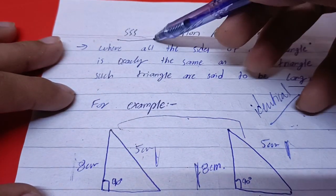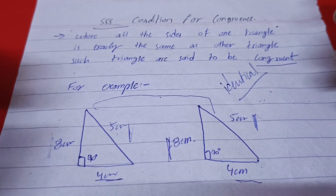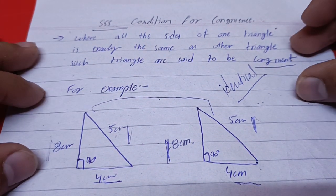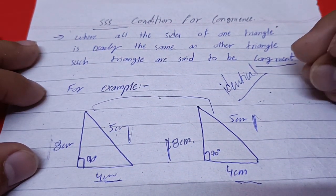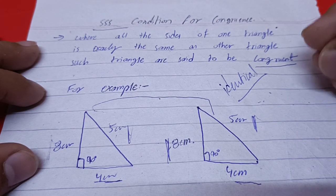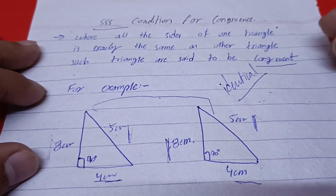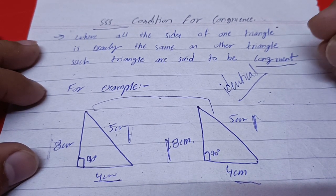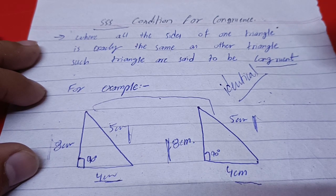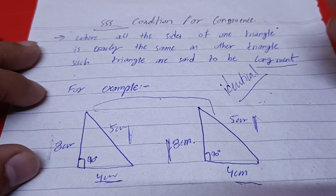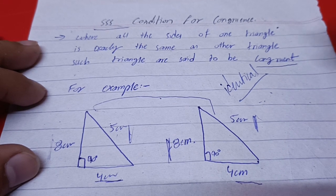So, this condition is basically, if it is short and simple, I will explain this. If the three sides of one triangle are the same as the three sides of another triangle, then these two triangles are congruent.